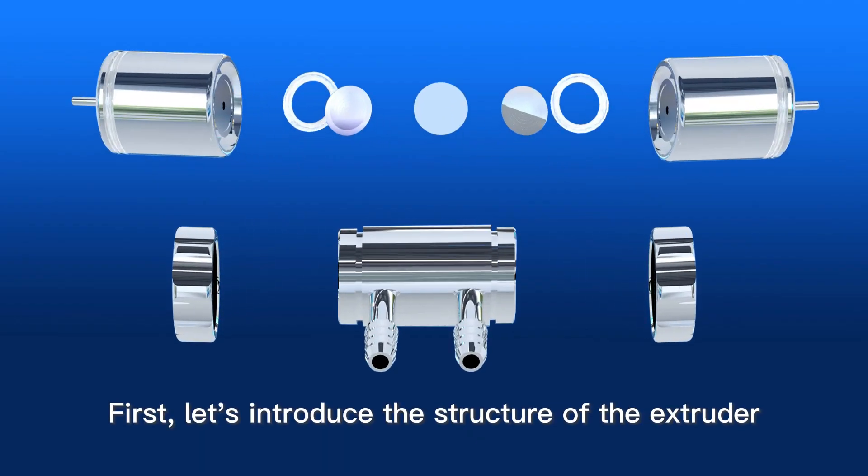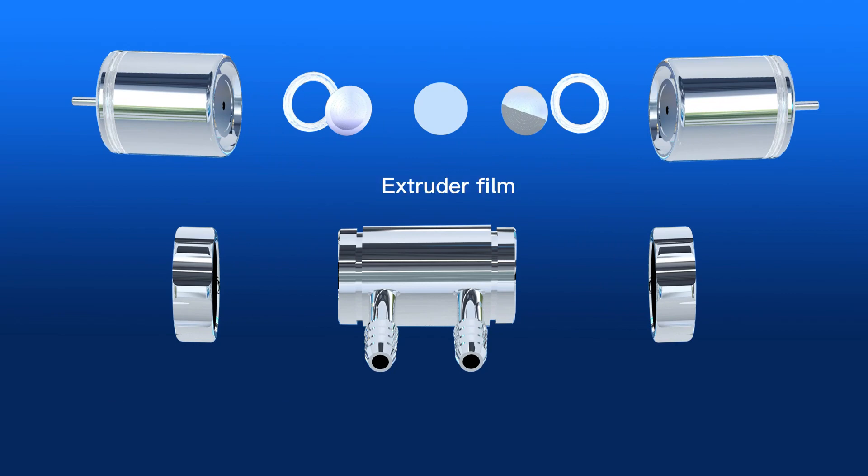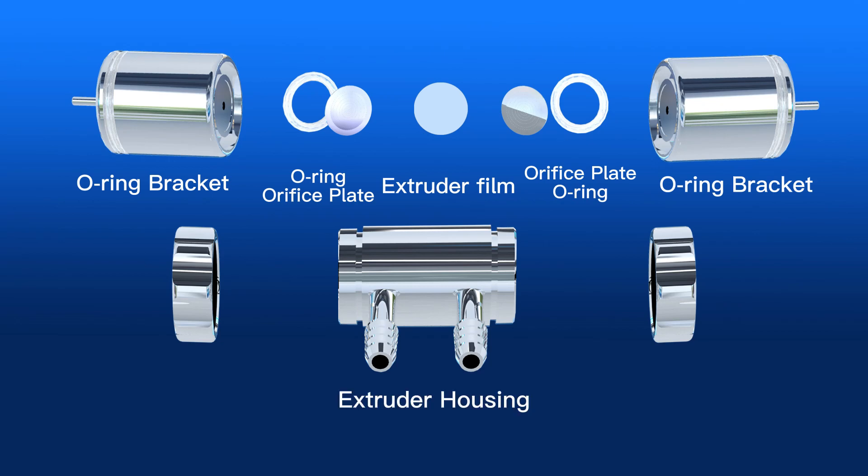First, let's introduce the structure of the extruder. Extruder film, orifice plate, O-ring, O-ring bracket, extruder housing, container nut.